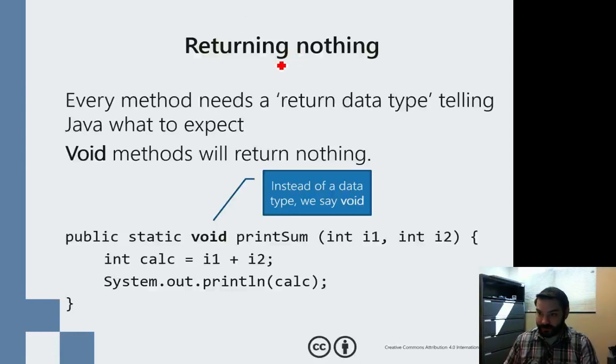When we say that we want to have a method that returns nothing, we actually specify it by adding in this term void.